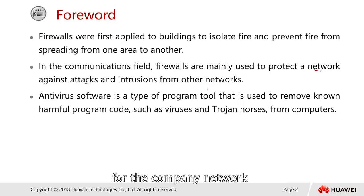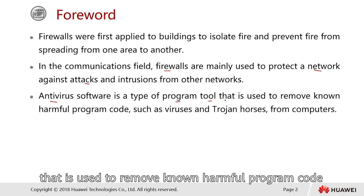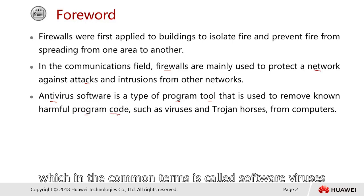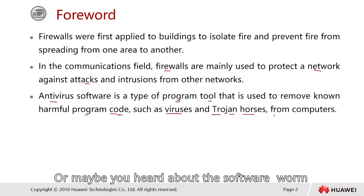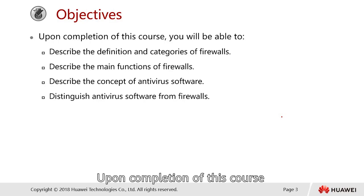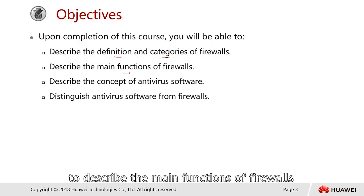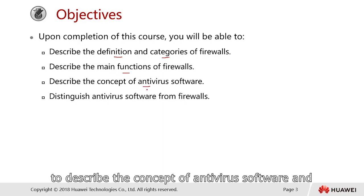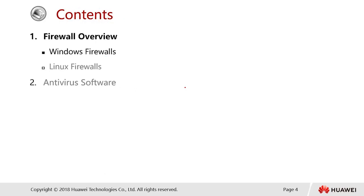Firewalls mainly protect the company network from attacks originating from internet traffic. Antivirus software is a type of program tool used to remove known harmful program codes — commonly called viruses, Trojan horses, malware, worms, and so on. Upon completing this course, we should be able to describe the definition and categories of firewalls, their main functions, the concept of antivirus software, and distinguish antivirus software from firewalls.